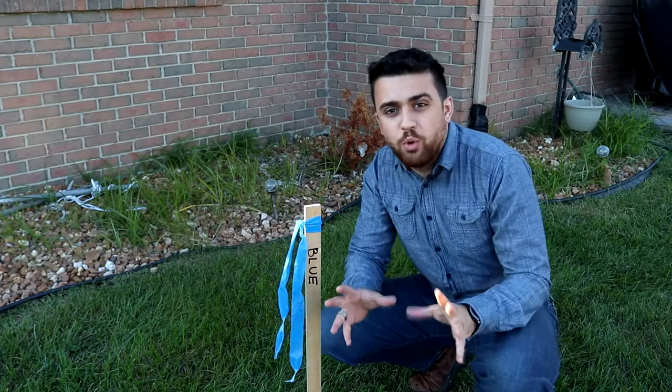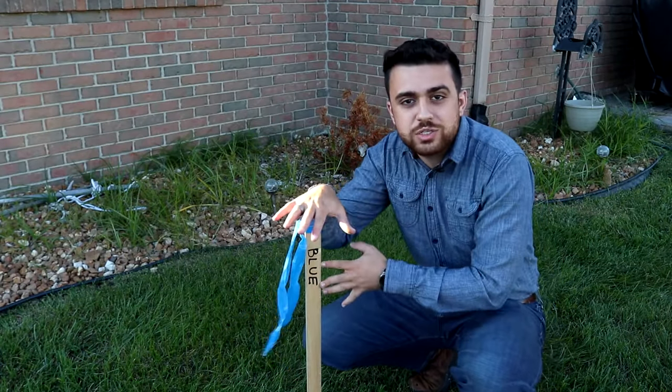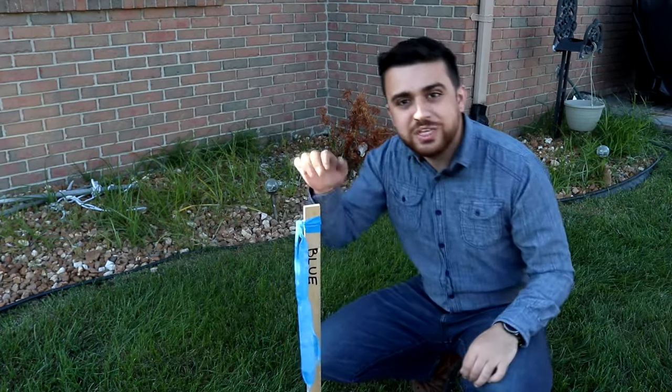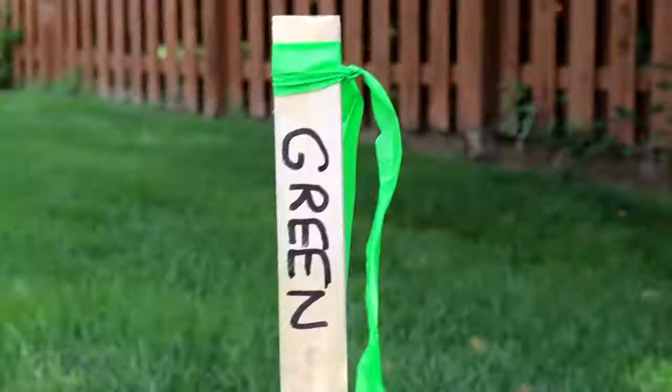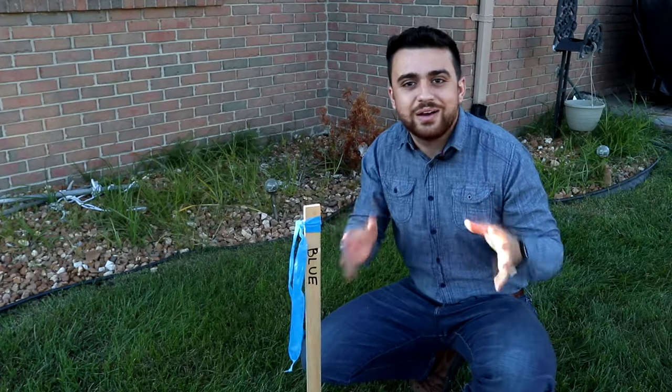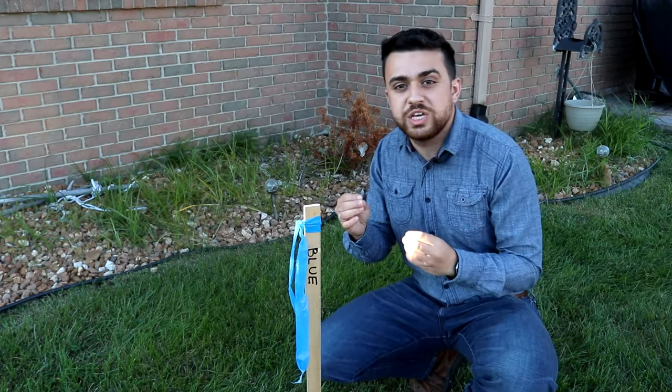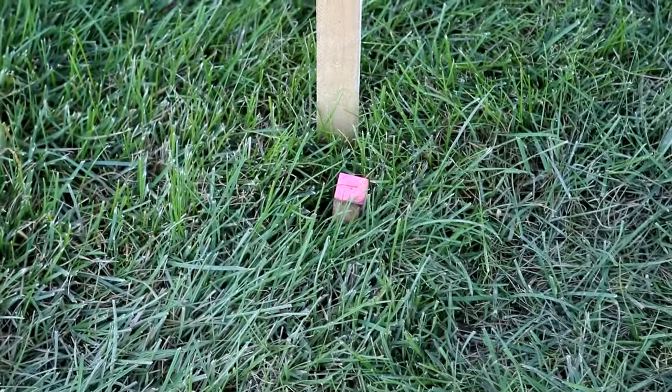However, if you have points with known locations, you can use these points to calculate where your instrument is set up. Remember these points? The blue, green, and orange points? Yeah, we're going to be using these points to calculate where our total station is located. Now while these points may seem familiar, I did however make one small modification.